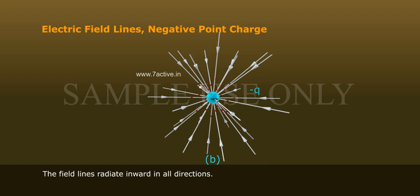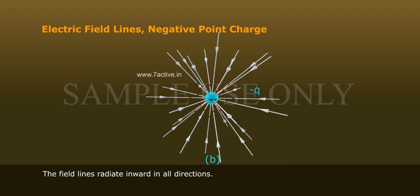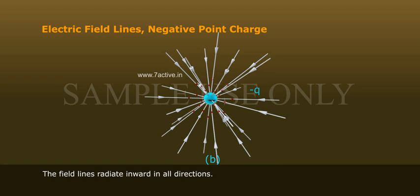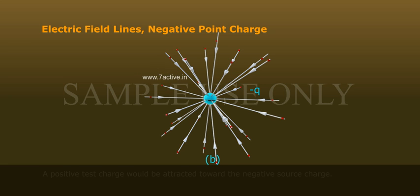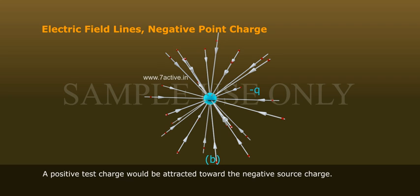For a negative point charge, the field lines radiate inward in all directions. The lines are directed toward the source charge, and the positive test charge would be attracted toward the negative source charge.